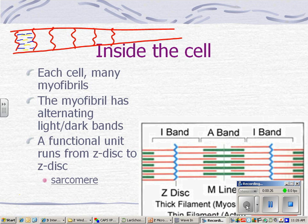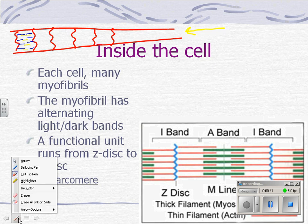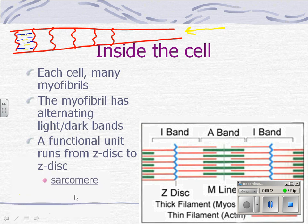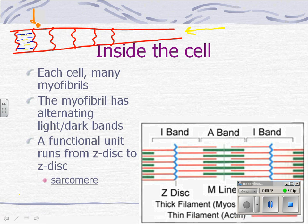So a muscle cell is a single muscle fiber. Remember, when you look at muscles under a microscope, they have these stripes going across them. Each one of those stripes is what's called a Z-disc, or Z-line.